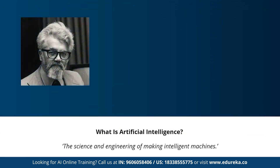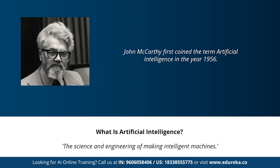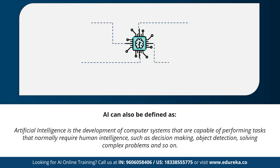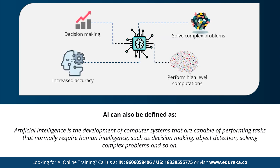The term artificial intelligence was first coined by John McCarthy, who defined AI as the science and engineering of making intelligent machines. In other words, artificial intelligence can also be defined as the development of computer systems capable of performing tasks that require human intelligence, such as decision making, object detection, and solving complex problems. Artificial intelligence helps in decision making, solving complex problems, performing high-level computations, and also increases the accuracy of your predictions. These are the main features of AI.